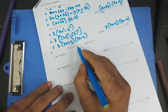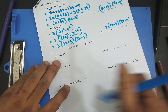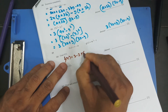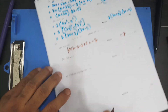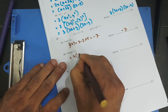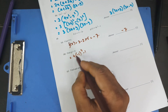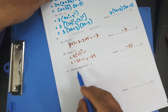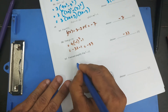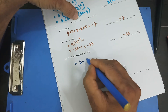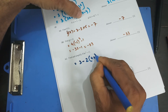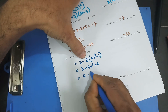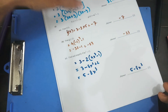Given f(x) equals 3 minus 2x and g(x) equals 4x³ minus 1. Find f(5): replace x with 5 to get 3 minus 10 equals minus 7. Find g(minus 2): 4 times (minus 2)³ minus 1 equals 4 times (minus 8) minus 1 equals minus 32 minus 1 equals minus 33. Find fg(x): replace x in f with (4x³ minus 1) to get 3 minus 2(4x³ minus 1) equals 5 minus 8x³.